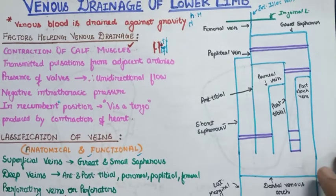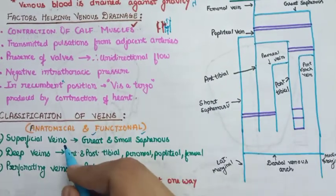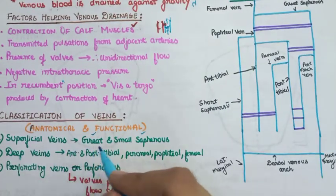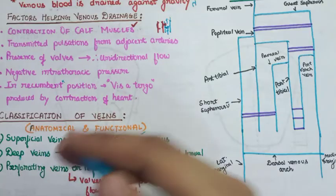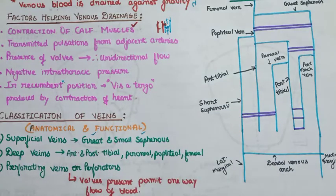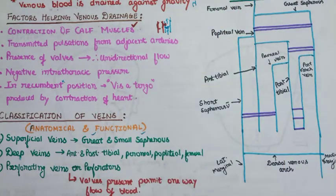So this was the overview of the venous drainage of the lower limb. In upcoming videos we will discuss the superficial veins — the great and small saphenous — in detail, and proceed accordingly. If you liked the video, please hit the like button and do subscribe to the channel.